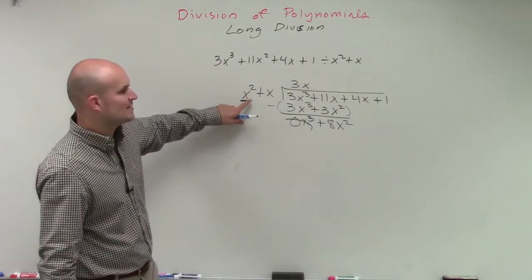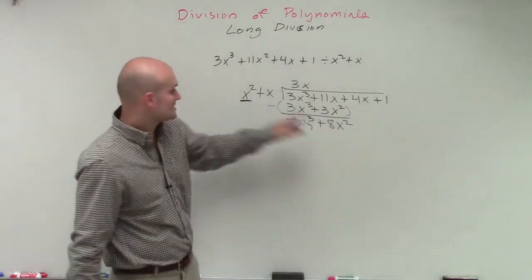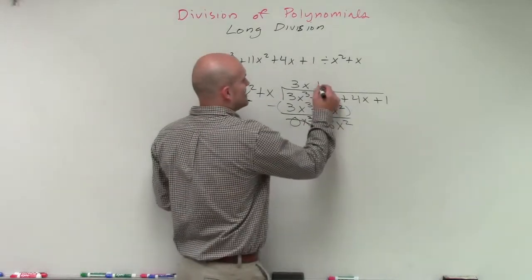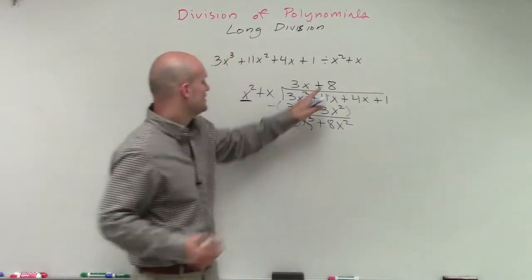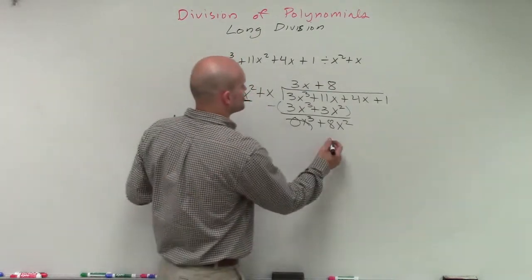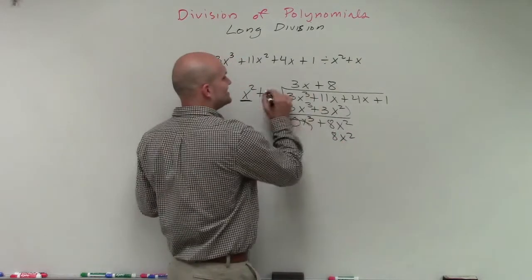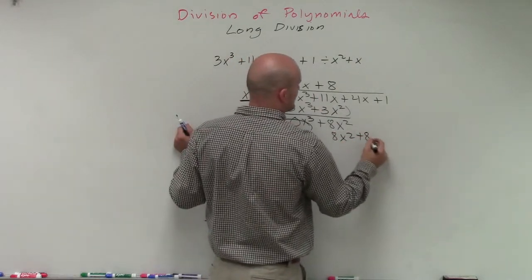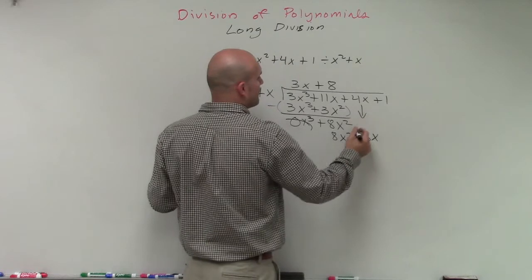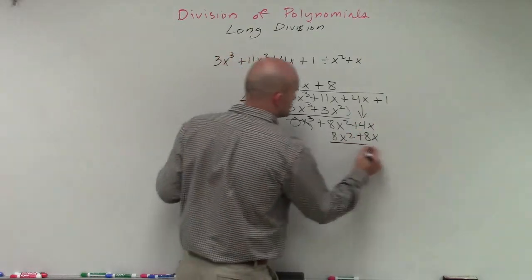Now I divide again my first term into this next. So x squared divides into 8x squared, a positive 8 times. 8 times x squared is going to be a positive 8x squared. And 8 times x is going to be a positive 8x. I bring down my 4x, a positive 4x, to do my subtraction.